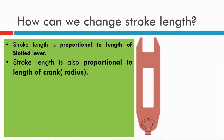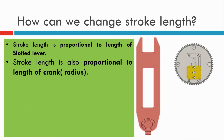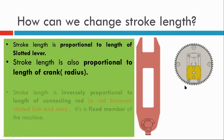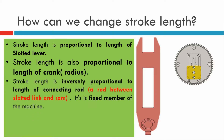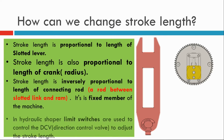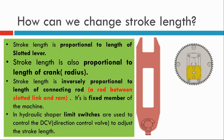The second method: stroke length is proportional to the radius of crank distance from the center of the bull gear. A sliding crank is attached to the bull gear — we will discuss this later. The third method: stroke length is inversely proportional to the length of the connecting rod, which is the rod between the slotted link and the ram. This is fixed in some machines. Also, using a hydraulic setup with the help of a limit switch, we can adjust the stroke length by controlling the directional control valve.